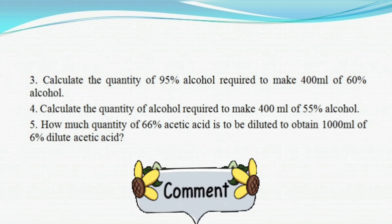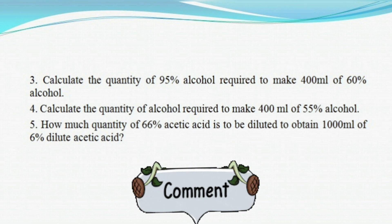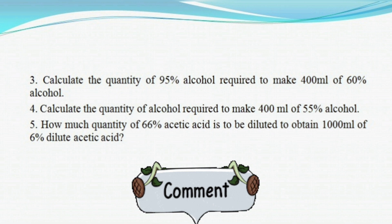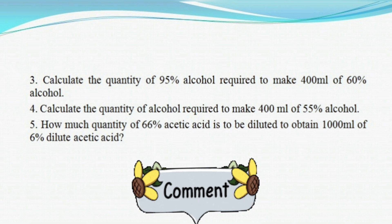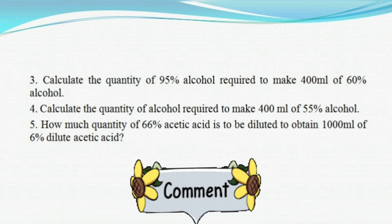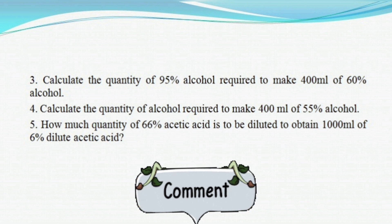Note that calculators will not be allowed during the exam, so practice calculating manually. One more problem: Calculate the quantity of alcohol required to make 400 ml of 55% alcohol — assume it as 95%. And one last sum: How much quantity of 66% acetic acid is to be diluted to obtain 1000 ml of 6% dilute acetic acid? Apply the same formula: 1000 × 6 ÷ 66.